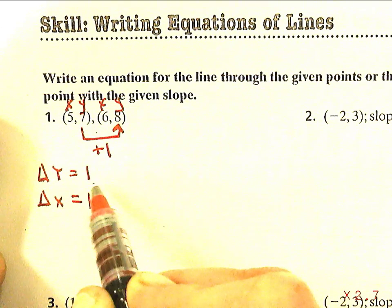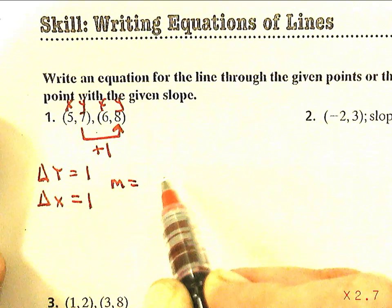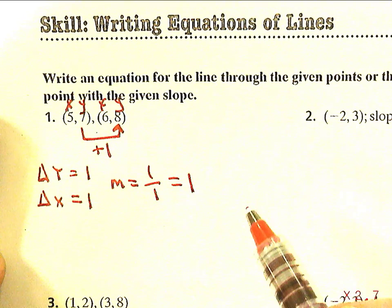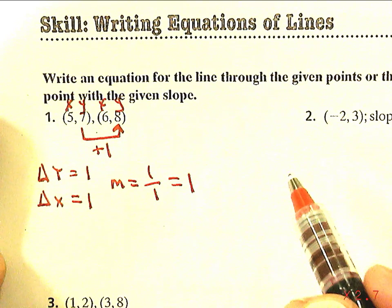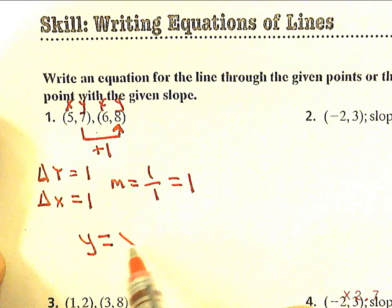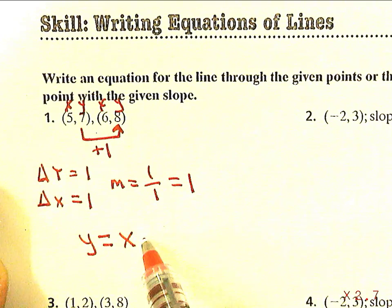So the slope of this line is 1 over 1, or just 1, or 1 times X. Now I actually have this much of the equation: y equals X. The question is what I'm going to add or subtract to this to get the other number.